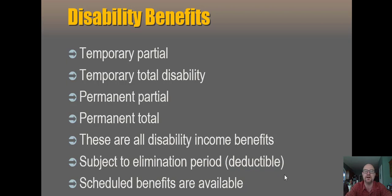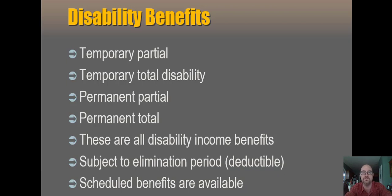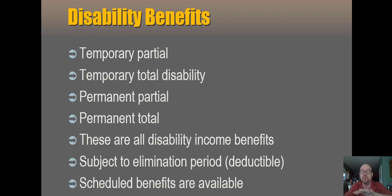All of these are disability income benefits, and because of that, we usually have a deductible — a short waiting period you have to fulfill before you start collecting benefits, often seven days or one business week. Sometimes we have scheduled benefits. If you lose a finger at work, they might pay you $20,000. You lose your dominant hand, they might pay $200,000 — though those numbers tend to run on the low side. If you lose sight in both eyes, that generally gives you a full benefit, equivalent to a death benefit. It's a scheduled list of horrible injuries with corresponding payment amounts.